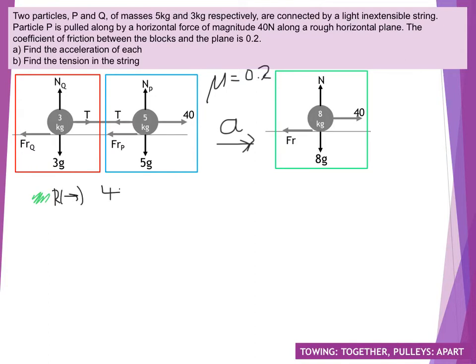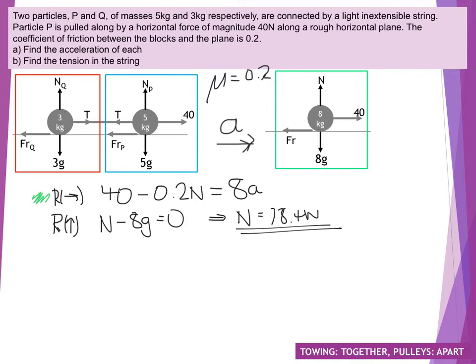If we do that, and we resolve to the right, we're going to have 40 minus 0.2N, so that's my friction component, and that's going to be equal to 8A. Obviously, we're also going to need to think about finding out the value of N, so it might be helpful to resolve upwards. We've got N minus 8G being equal to 0, so this is a nice, easy calculation for N. It's 8 times 9.8, giving us 78.4N. I can immediately take that value and sub it into equation 1. So, that's going to give me an acceleration of 3.04 meters per second squared, and you should just check that calculation, rearranging it for yourself.